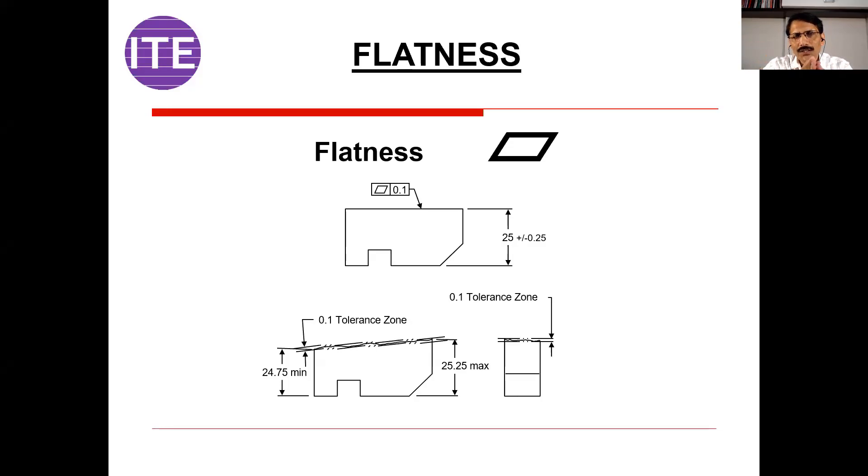We have to understand when to go for flatness. Generally, when we say datum is to be provided, we are assuming that datum is not a perfect surface. We are assuming that it is perfect. There are some irregularities for that particular surface also. Most of the times to define a datum, any of the characteristics in the form categories is used to define the datum. When you specify a datum, that surface, you can provide with flatness. That means it's an important surface.